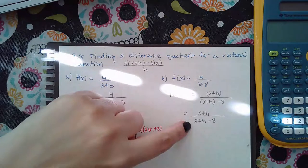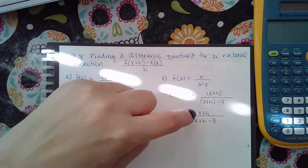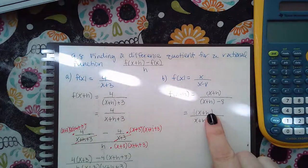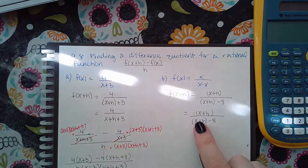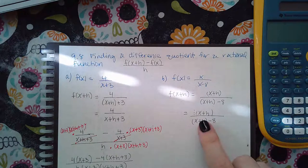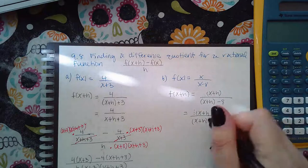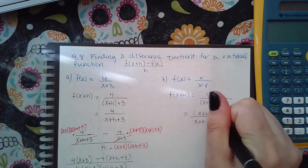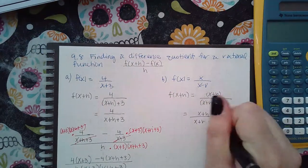You cannot cancel x plus h and x plus h here. In order to cancel something, they have to be factors. Even if I write this with parentheses, the denominator is x plus h minus eight — that is not x plus h times negative eight; it's x plus h minus eight. When something is added or subtracted, it is not a factor. It has to be multiplied in order to be a factor. The most common mistake is trying to cancel terms that are added and subtracted versus canceling only factors — things that are multiplied.